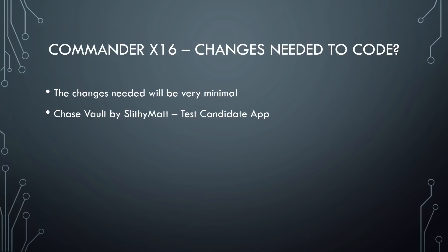The last thing I wanted to show is what these code changes would mean to someone's application, and honestly they're very minimal. I know very little about assembly language in general — I'm not particularly good at it — but I was able to go and look at the source code that Slithymat wrote for Chase Vault. This is a game I wanted to run in my last video but wasn't able to get it to run on the hardware. I went back and he does have the source code out on GitHub, and I thought I'd take a stab at just recompiling it and seeing if I could get it to run. I was able to get it to work, and I thought I would just show real quick what the changes are in the code to make it work from the old hardware to the new.